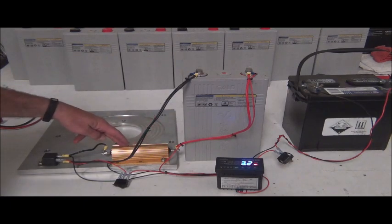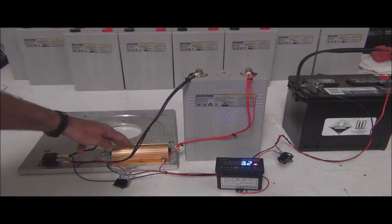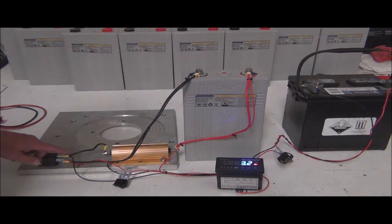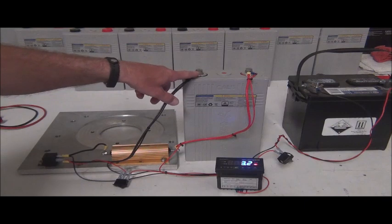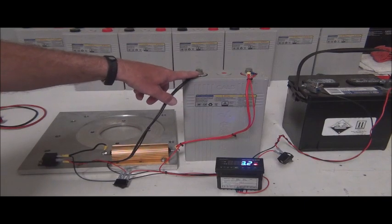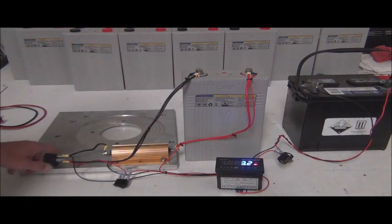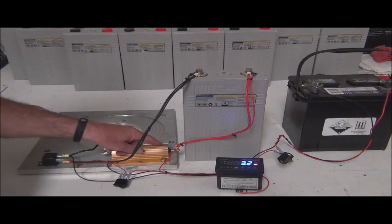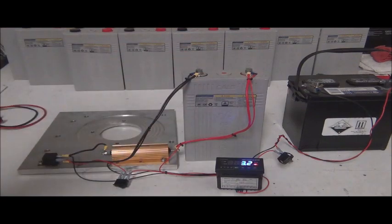And we'll talk about how much power is being consumed in a moment also. So it goes through the load or the resistor. It's going through our relay and back to our battery. So there's your series circuit through the relay, through the resistor, through the battery.